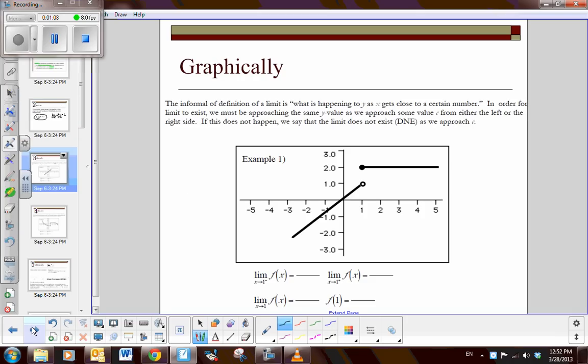So looking at a graphical perspective, first of all. Now remember, when we talk about limits informally, it's basically what is happening to the y value as x gets closer to a certain number. Remember, what is y approaching? Key phrase there, approaching. Okay, either from the left or the right. Now if the value is not equal from the left and the right, the limit does not exist.